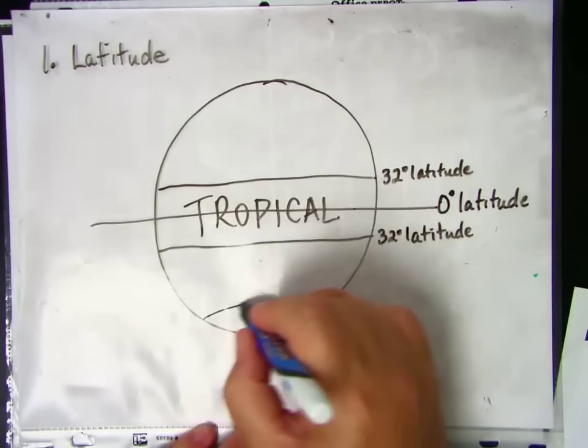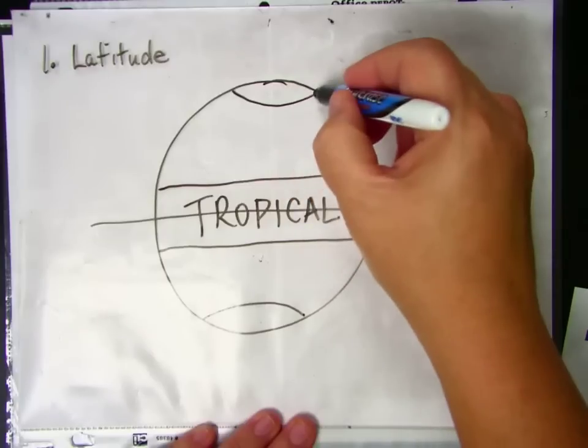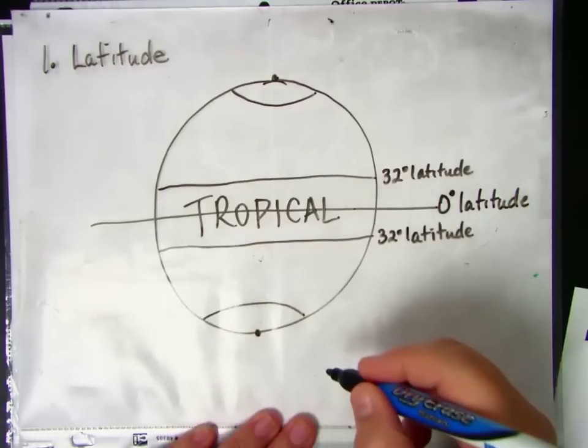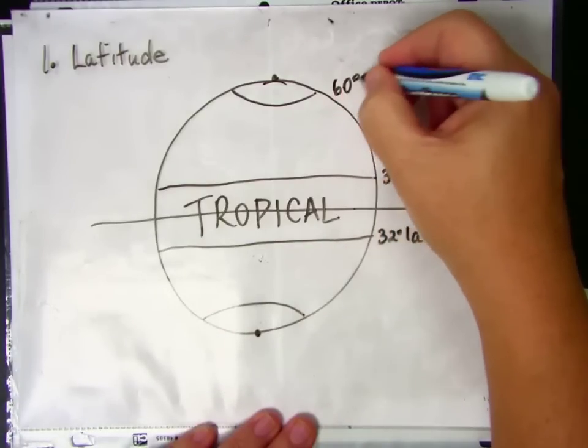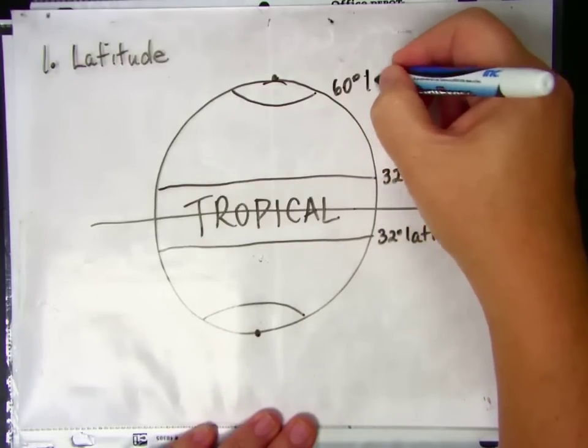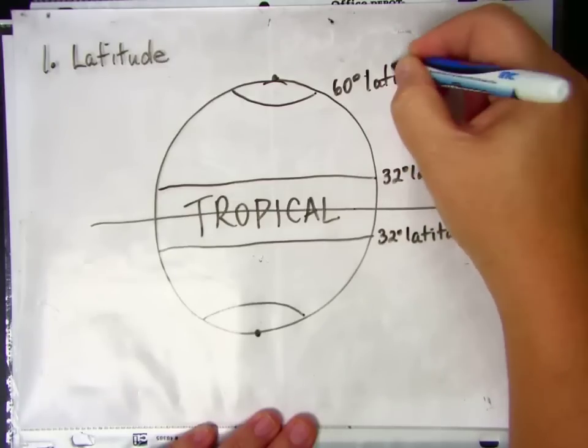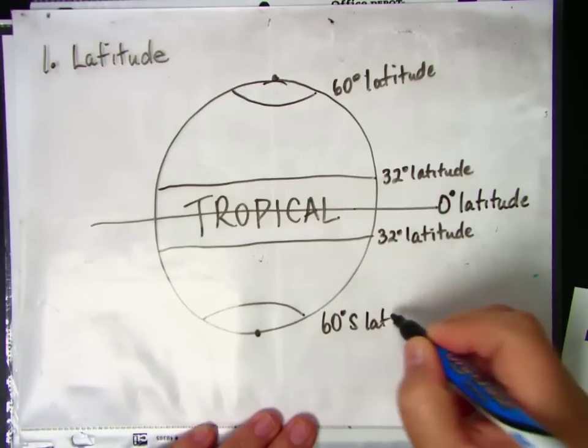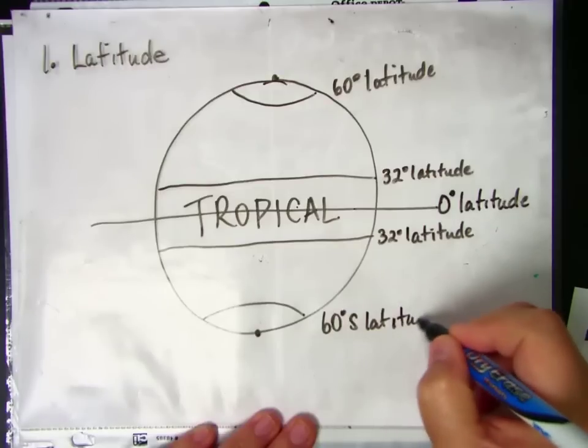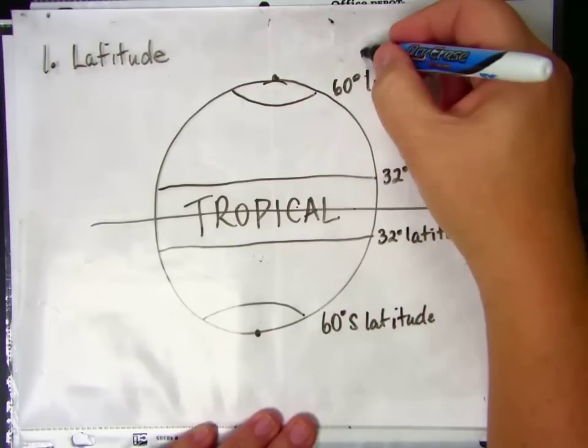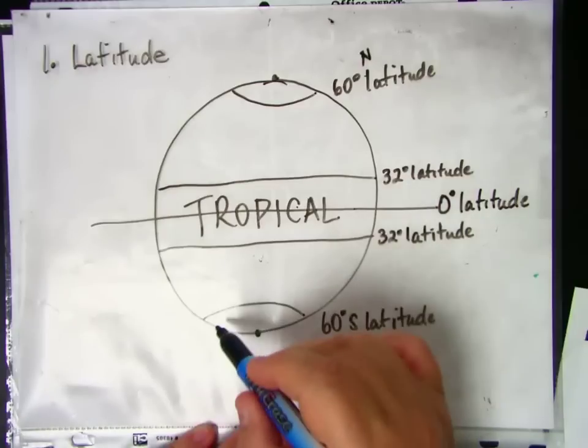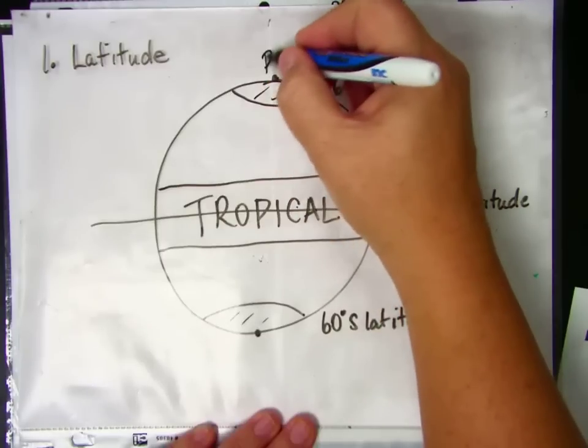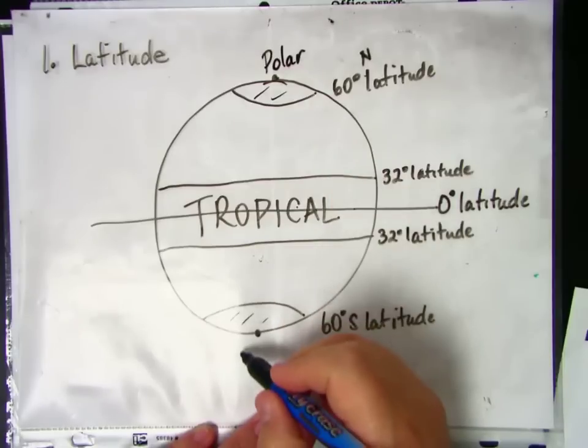Then you get down to the ends of the planet. Those two ends are called the poles, the North Pole and the South Pole. And at about 60 degrees latitude, the polar climate begins. This is 60 degrees south latitude because it's south of the equator. And this is 60 degrees north latitude because it's north of the equator. And both of these climate zones here are called the polar climate zones. And it is cold there.